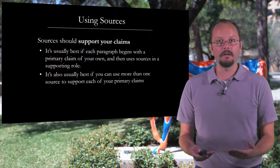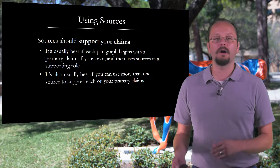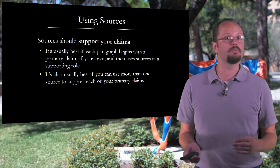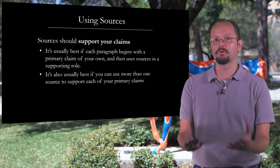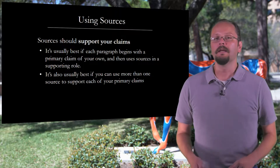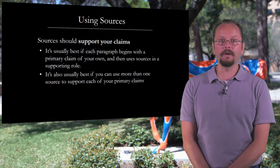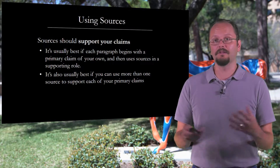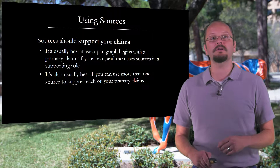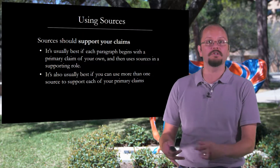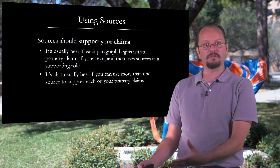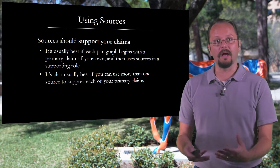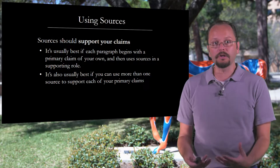Each of your sections will involve different types of claims. In the history of the policy section, you might make claims about why specific previous policies were passed and where they fell short or were useful. In your history of the social problem section, you might be claiming that the problem is widespread and provide data on that, or claim that the problem has serious negative outcomes and provide data to support that. Basically, we want the data to supply a supporting role.